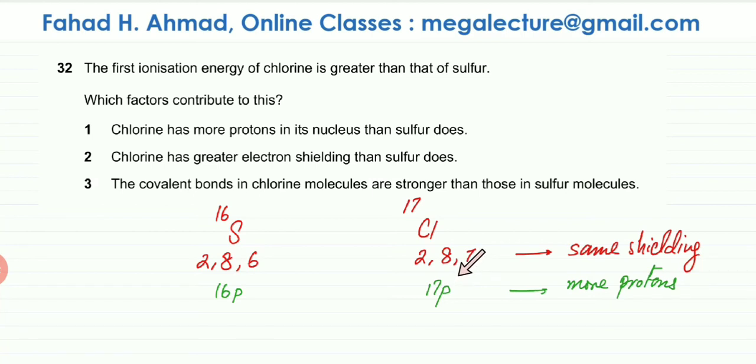The atomic radius also slightly decreases. Chlorine is a slightly smaller atom compared to sulfur because more protons lead to more attraction. They have the same number of shells but because chlorine has more protons the shells would be attracted more strongly which leads to a smaller atom.